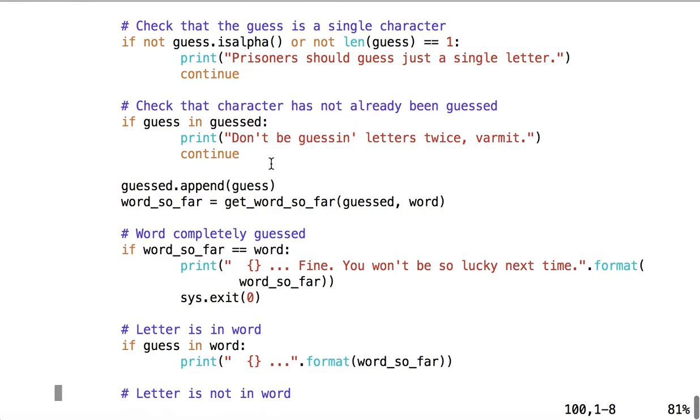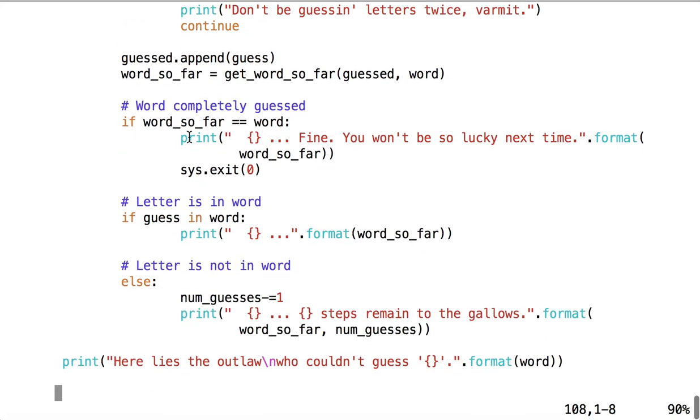So once we know what it does, we can simply read over this line, wordSoFar is the string returned from getWordSoFar. Alright, and then we enter the last part of the PlayHangMan method, where we were before. So we return to this call, we have wordSoFar.